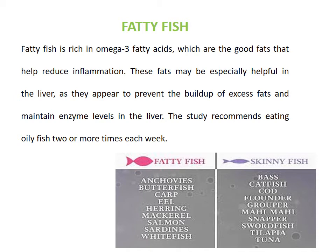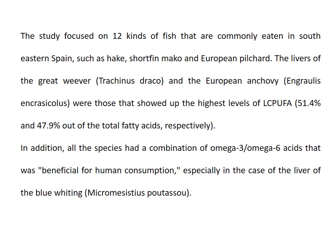Here are some lean fish which contain less amounts of unsaturated fatty acids. A study focused on 12 kinds of fish commonly eaten in southeastern Spain, such as hake, short-fin squid, mackerel, European pilchard, the great weaver, and the European anchovy — whose livers showed the highest levels of polyunsaturated fatty acids, with 51 to 47% of the total fatty acid present.